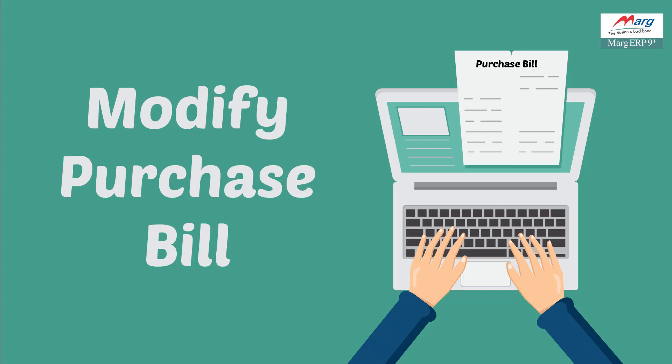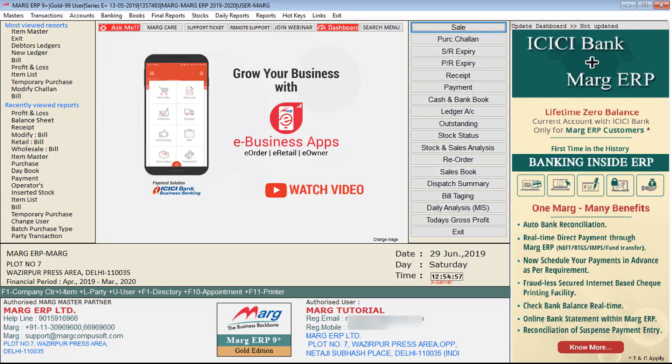If there is a need to do any modifications in the bill — suppose you have done any mistake while creating the purchase bill, like a wrong product was added, or quantity needs to be increased or decreased, or you want to delete any item from the bill — then with the help of the Modify Purchase Bill option, you can do the modifications as per your requirement.